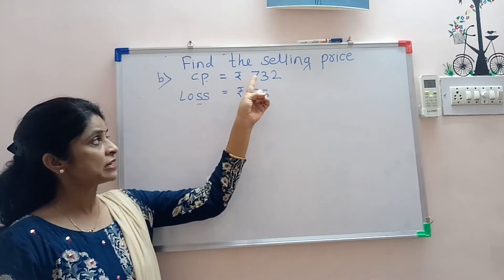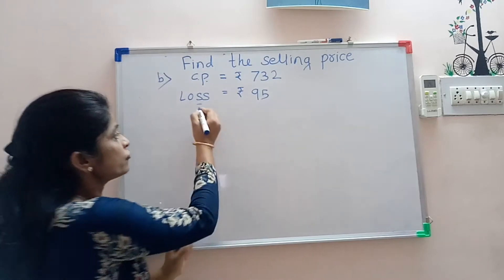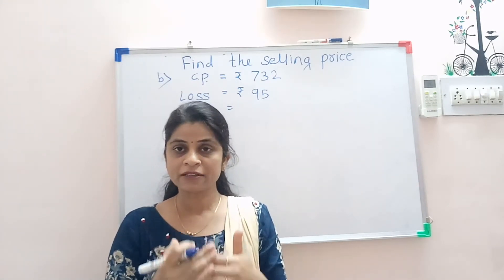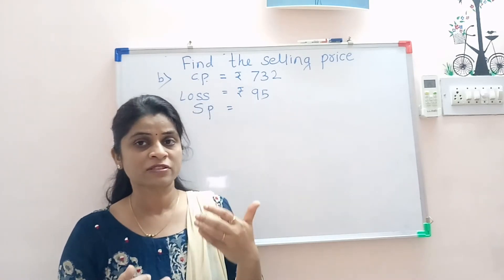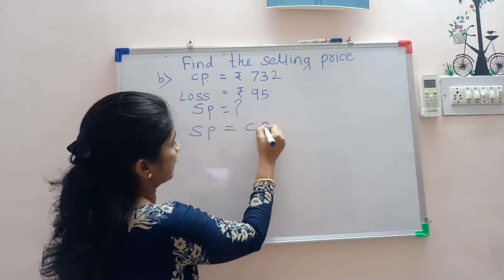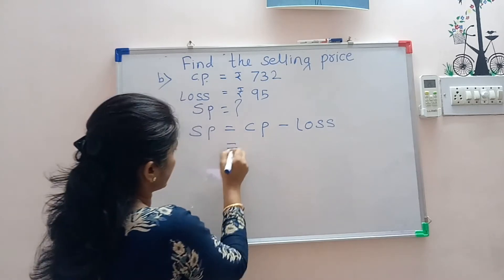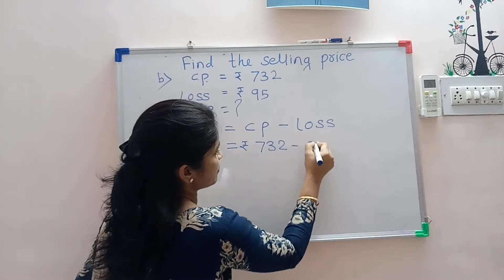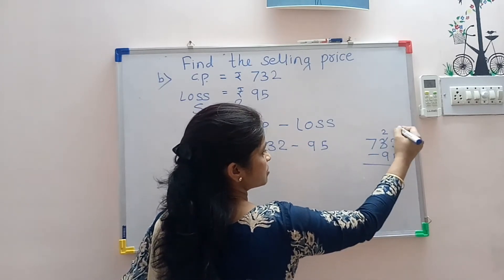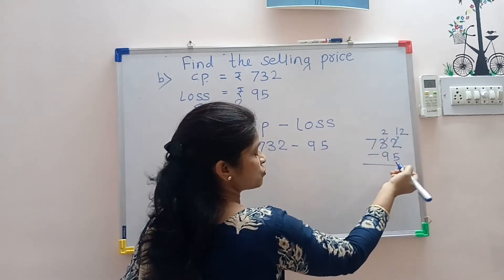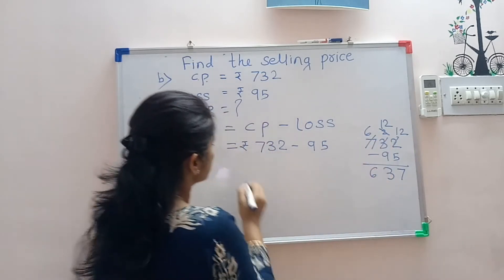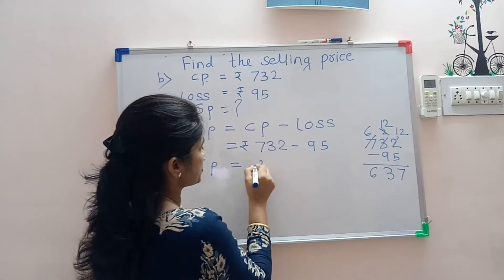Next example: cost price is given rupees 732 and loss is given rupees 95. Find out the selling price. Since cost price and loss are given, we subtract loss from the cost price. Selling price equals cost price minus loss. Doing the subtraction — not possible, so we regroup: 12 minus 5 is 7. Again regroup because 2 is smaller than 9: 12 minus 9 is 3, 6 minus 0 is 6. Selling price is equal to rupees 637.